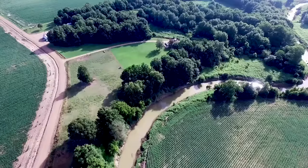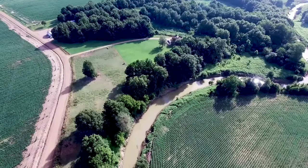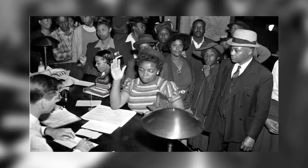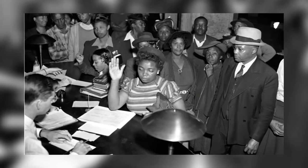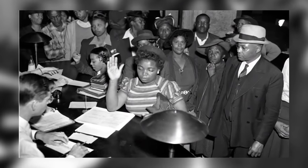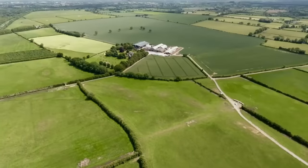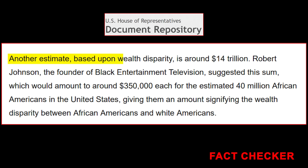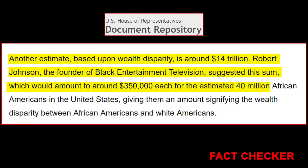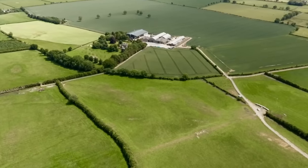Despite detailed proposals being presented, various administrations have merely touched on the issue without taking concrete action. A study in the Review of Black Political Economy suggests that considering all factors related to slavery, the U.S. owes approximately $151 million to every black American, highlighting why the U.S. has avoided this topic. Even if $151 million is not paid, at least $350,000 should be allocated to every black American — but who will pay the reparation money?